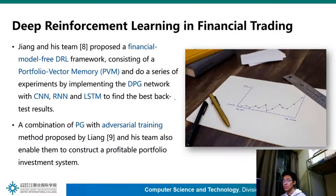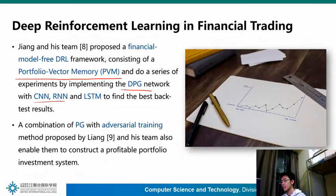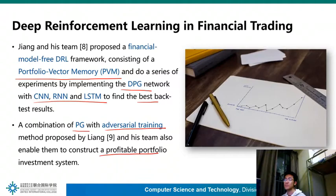Regarding deep reinforcement learning in financial trading, Jiang and his team proposed a model-free deep reinforcement learning framework consisting of a portfolio vector memory, implementing the DPG network with CNN, RNN, and LSTM to find the best backtest result. A combination of PG with adversarial training methods proposed by Liang and his team also enabled them to construct a profitable portfolio investment system.